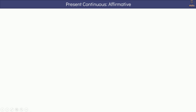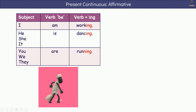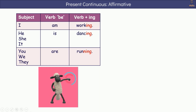To summarise, we form present continuous affirmative like this: subject, verb be, and verb with -ing. For example: I am working. He, she, it is dancing. You, we, they are running.